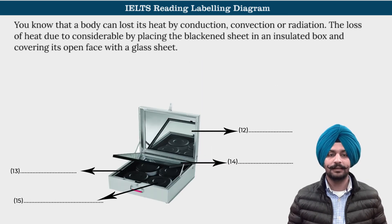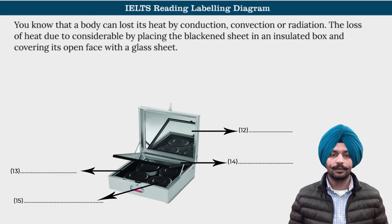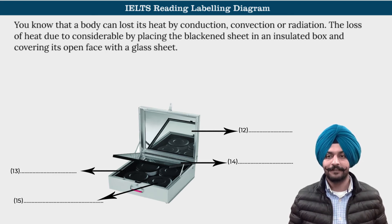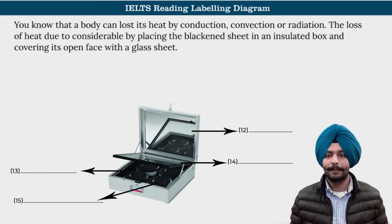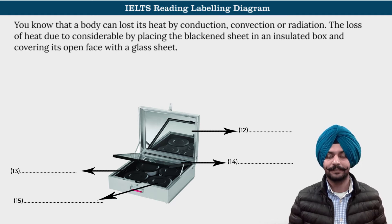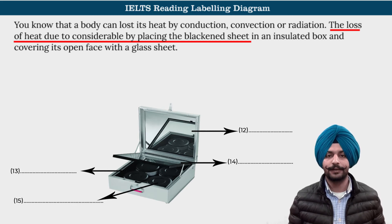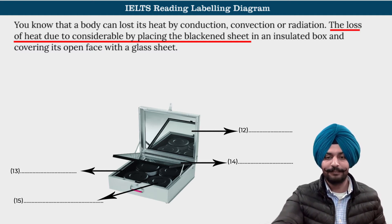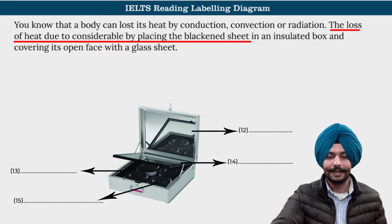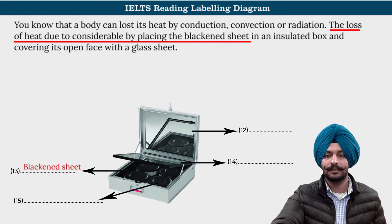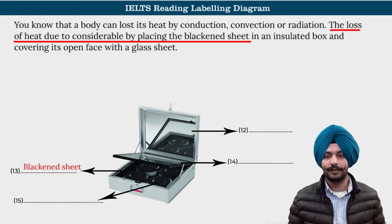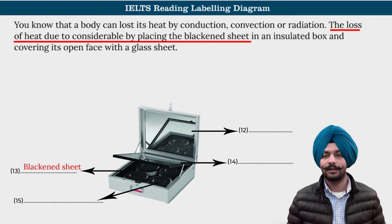Start with this section of the text: 'A body can lose its heat by conduction, convection, or radiation. The loss of heat can be reduced considerably by placing a blackened sheet in an insulated box and covering its face with a glass sheet.' So here they have talked about placing the blackened sheet — that is our answer for question 13: blackened sheet. Since the word limit is two words, we don't include 'the'.